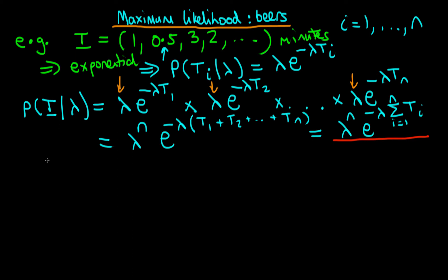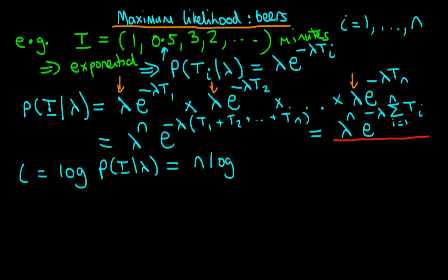In maximum likelihood, we want to find the value of lambda that maximizes this likelihood. We differentiate, but it's easier to first take the log of our density. The log-likelihood, denoted l, equals n times log of lambda minus lambda times the sum from i equals 1 to n of ti. The exponent disappears because taking the log of an exponent just gives the power to which it was raised.